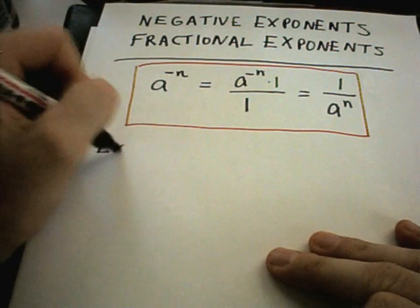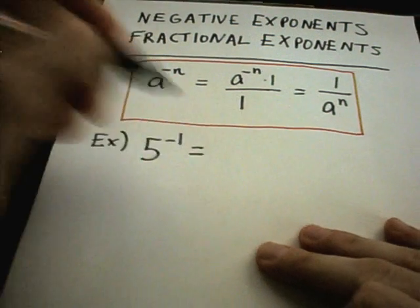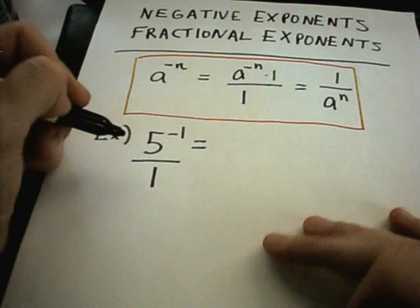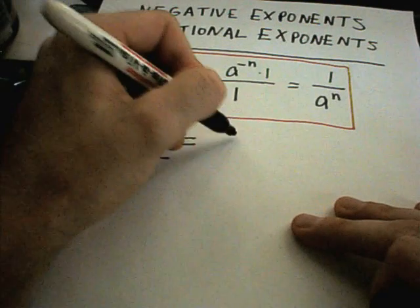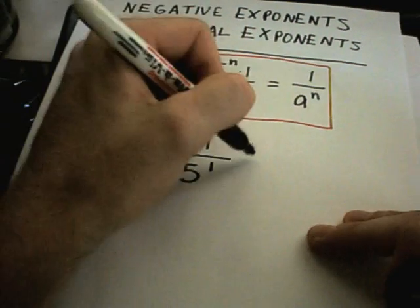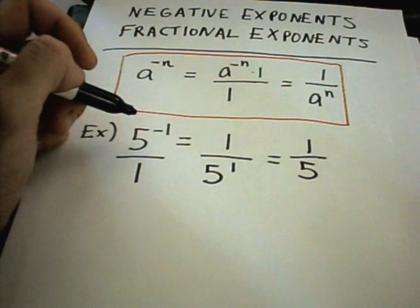So, for example, 5 to the negative first. I can think of 5 to the negative first as being 5 to the negative first divided by 1. I can just move the 5 to the denominator and get 5 to the first or 1 fifth. So, 5 to the negative first is really the same thing as 1 fifth.